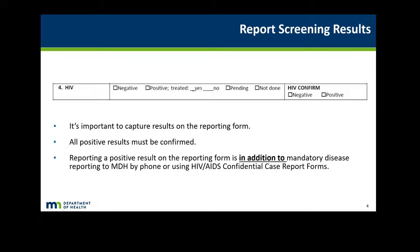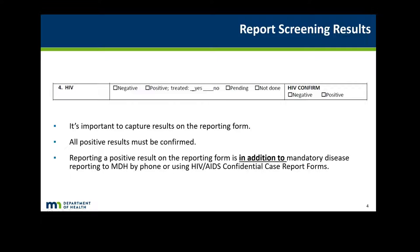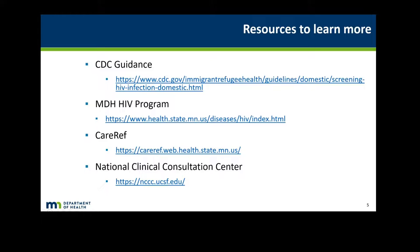As part of the paperwork for the Refugee Health Assessment that is submitted to the Refugee Health Program, there is a section where HIV screening results can be recorded. Please make sure this section is being filled out appropriately. Remember that all positive results must be confirmed, and reporting a positive result on this reporting form is in addition to mandatory disease reporting to MDH either by phone or using HIV-AIDS confidential case report forms.